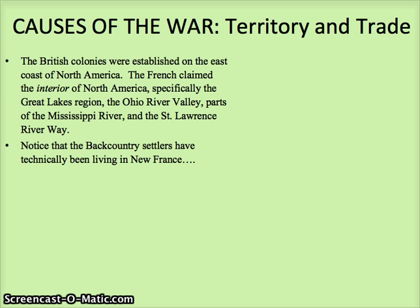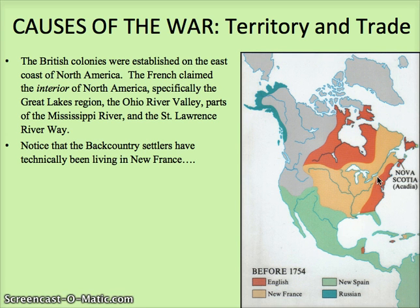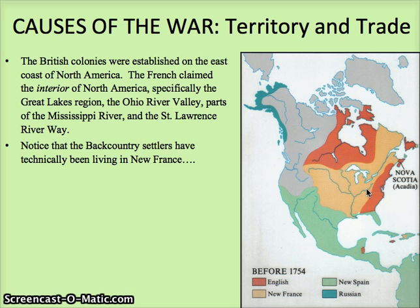Beginning with some of the causes of the war, you can see where the colonies were. The red shows where the English were, and the orangish color shows what the French had claimed — this had all happened back in the 1500s or so. The Ohio River, which forms part of the border of the state of Ohio now, comes into the story quite a bit. That area where backcountry settlers had been was actually in French territory, and that becomes a big deal in this story.